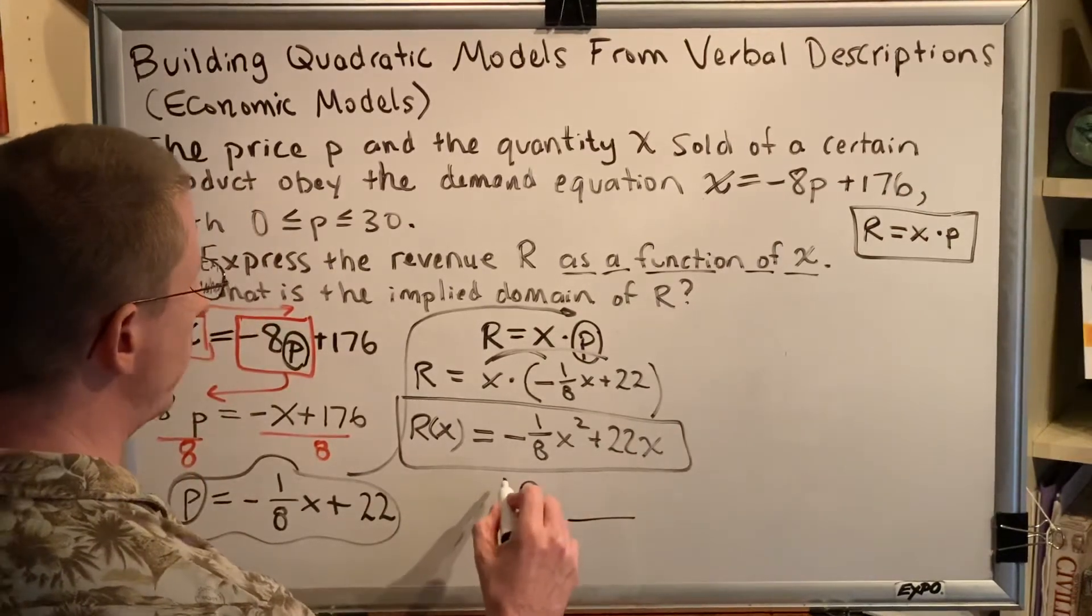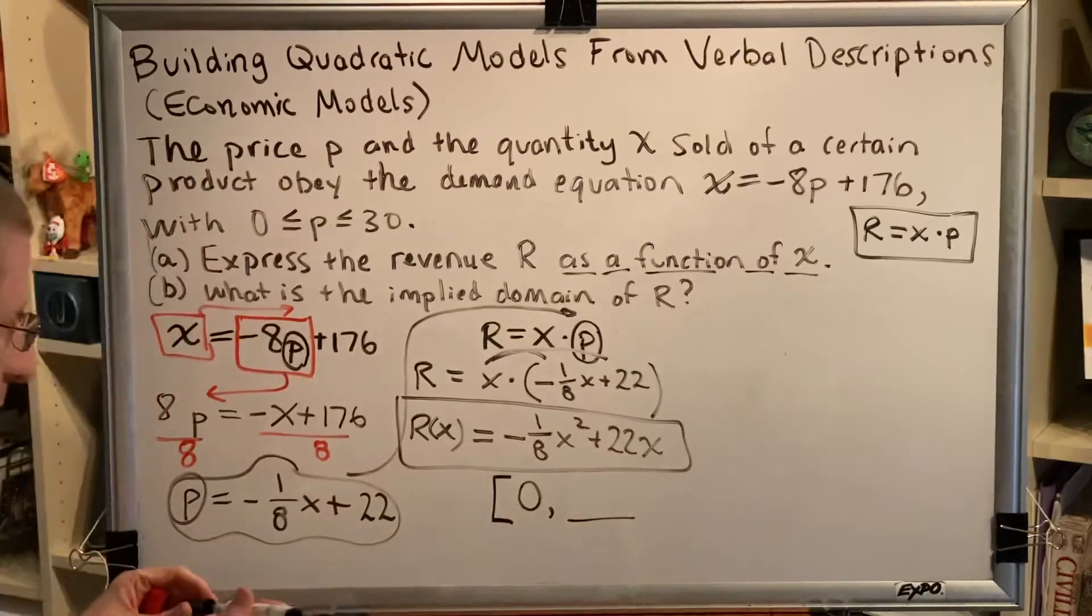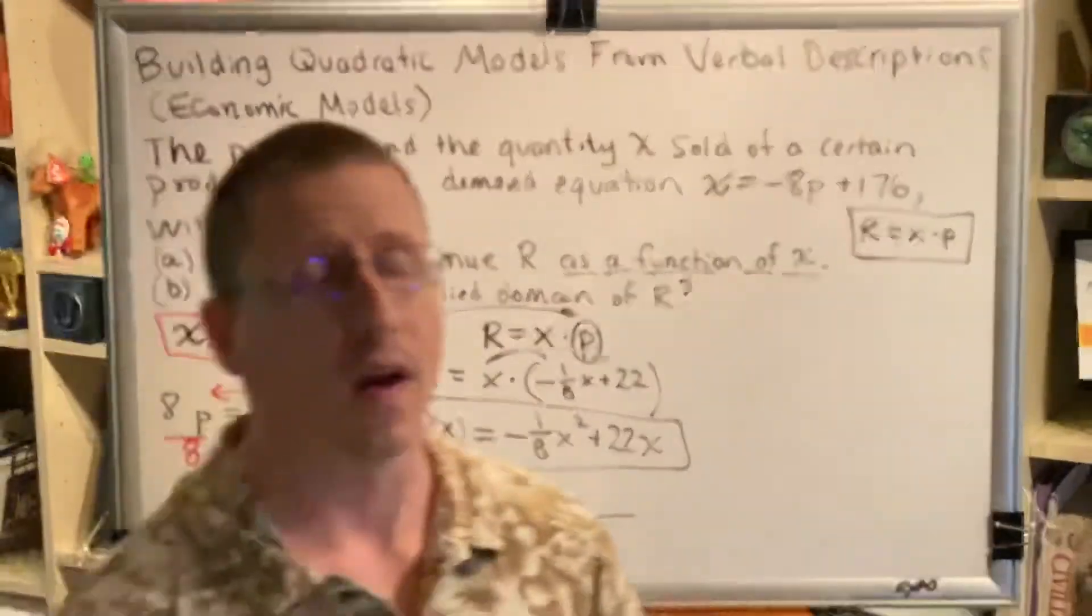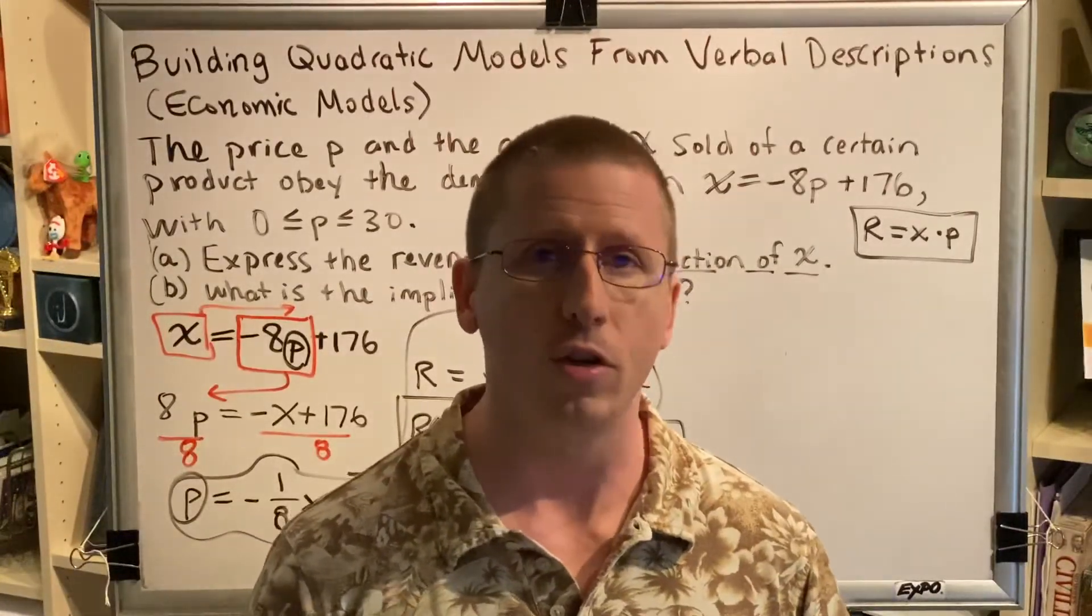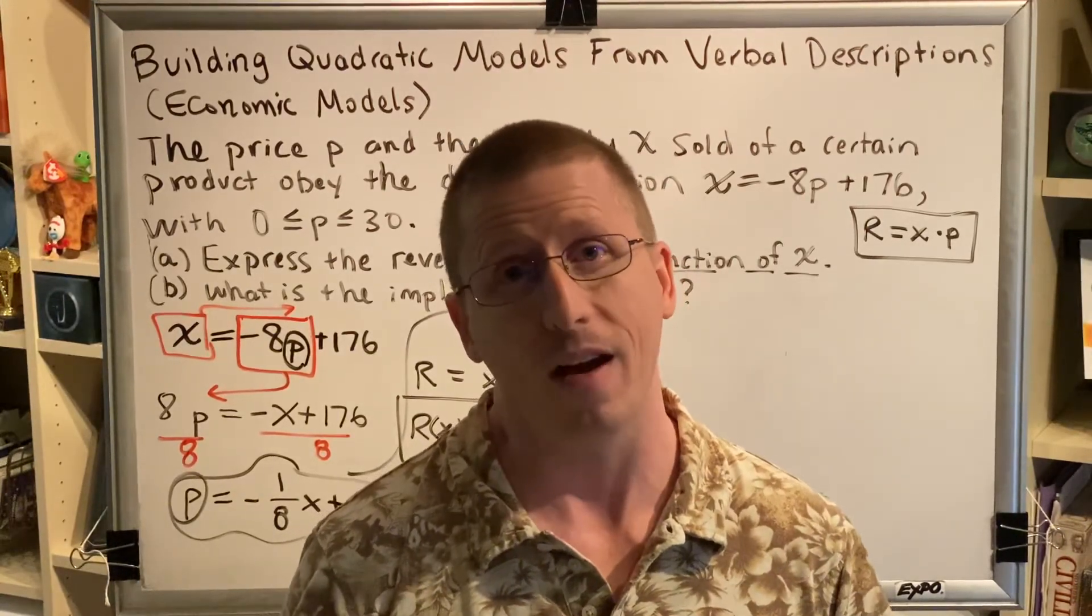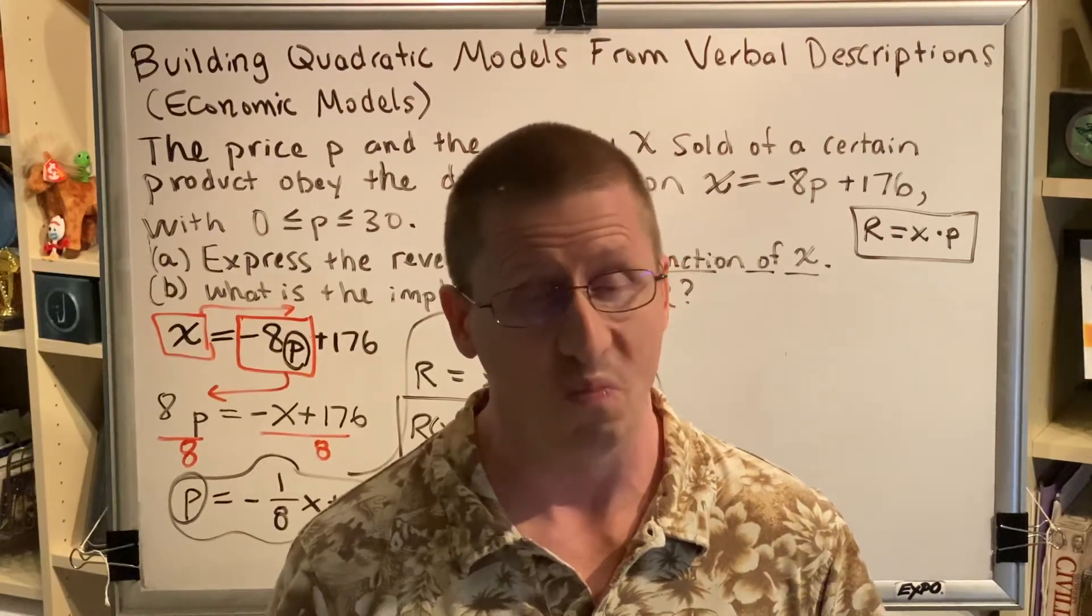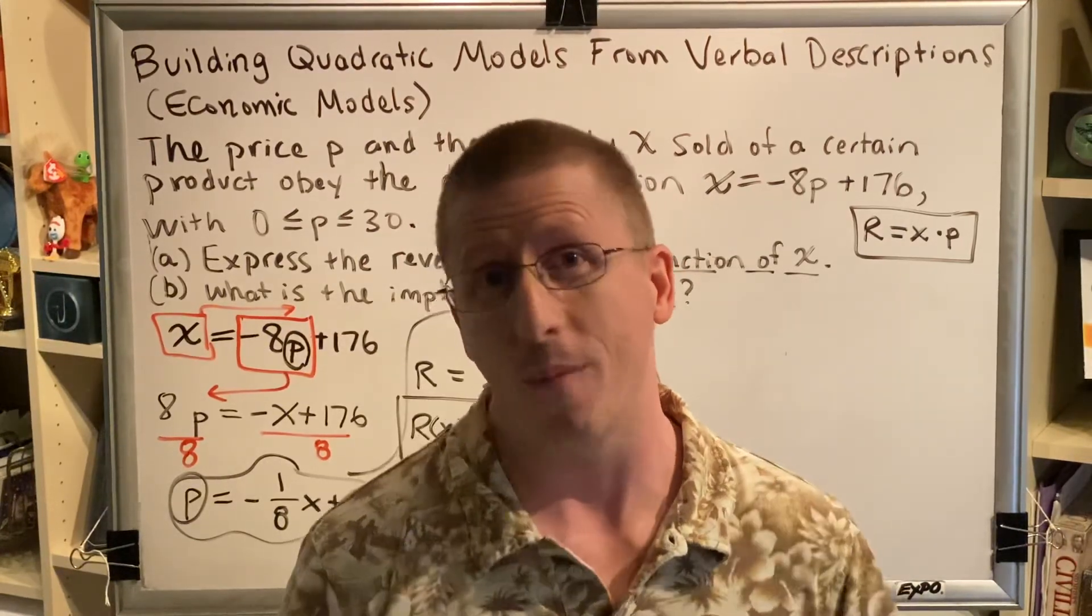Now, it's actually not going to be infinity. And the reason why is because it is not possible to sell an infinite number of items. So the next thing we have to do to get the answer to the implied domain is figure out how many items do we have. The most you can sell of a particular collection of items would be all of them.